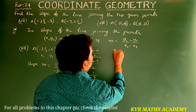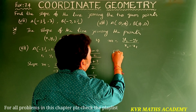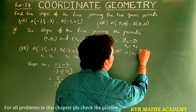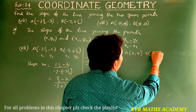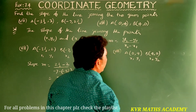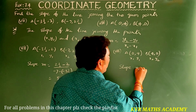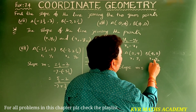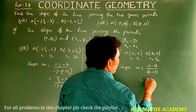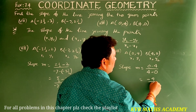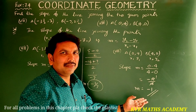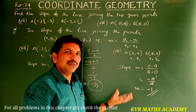Eighth and final one: given points are (0, 4) and (4, 0). These are x1, y1 and x2, y2. Slope m = (0 - 4) / (4 - 0) = -4 / 4 = -1. Slope m is equal to -1.